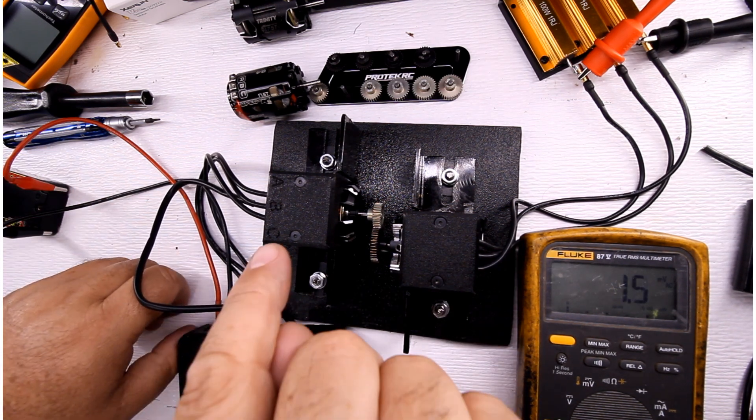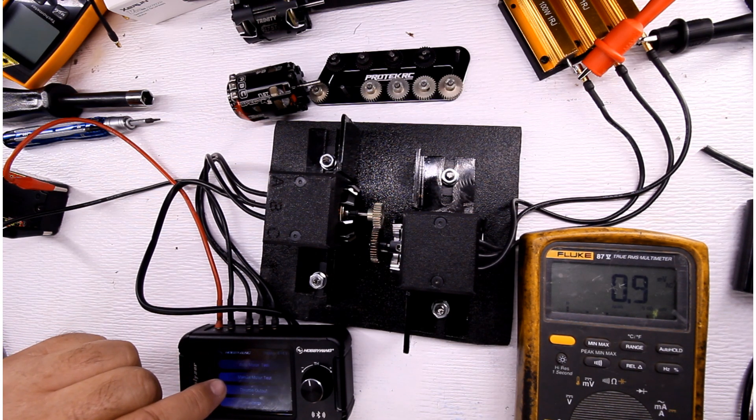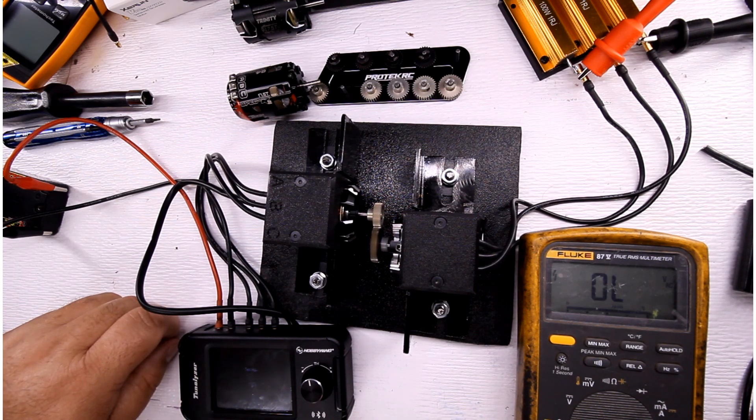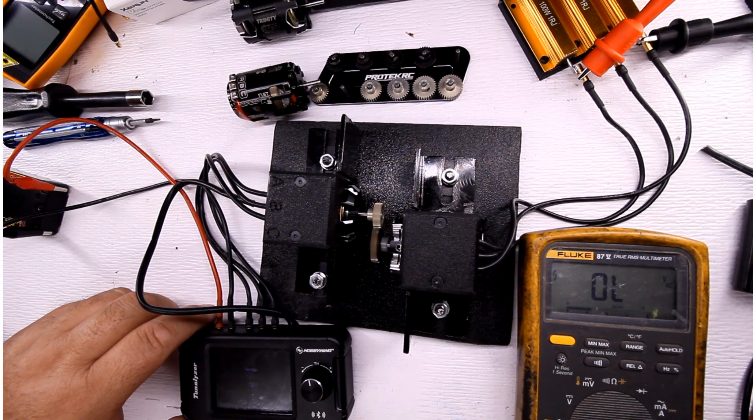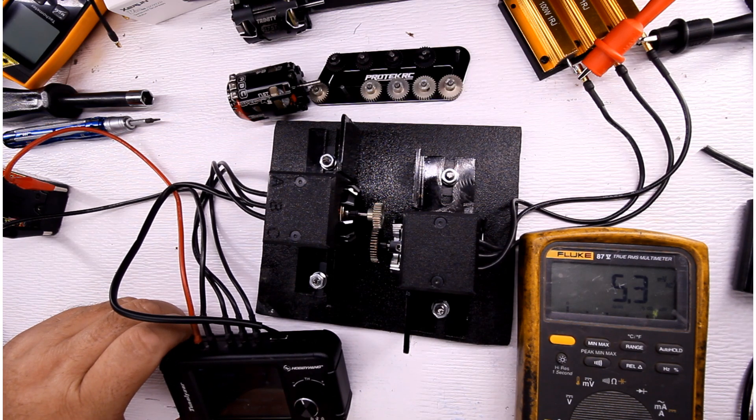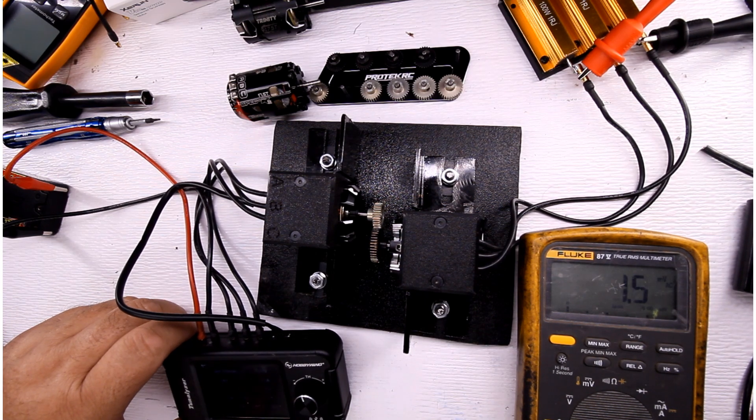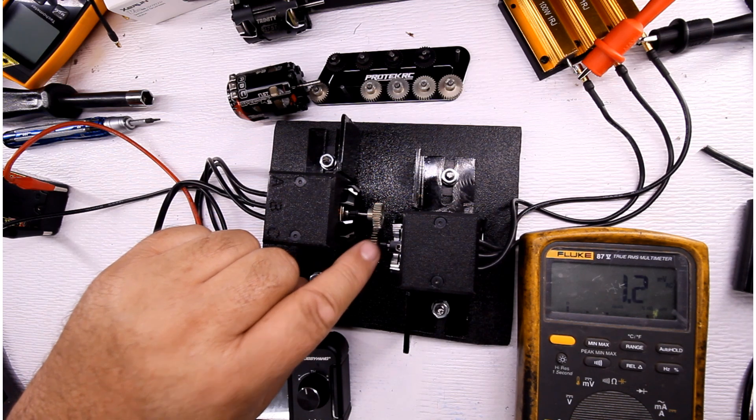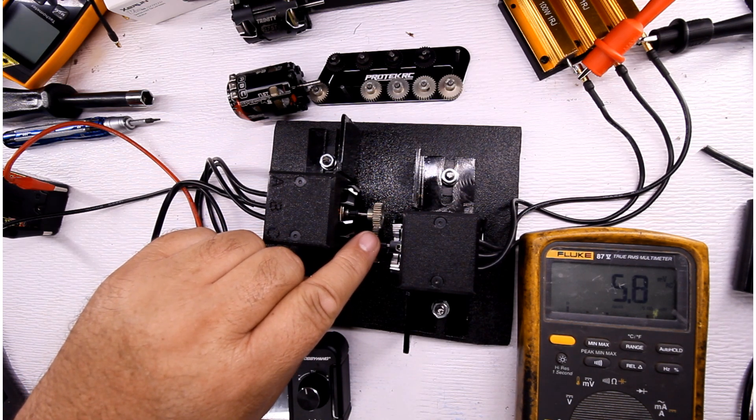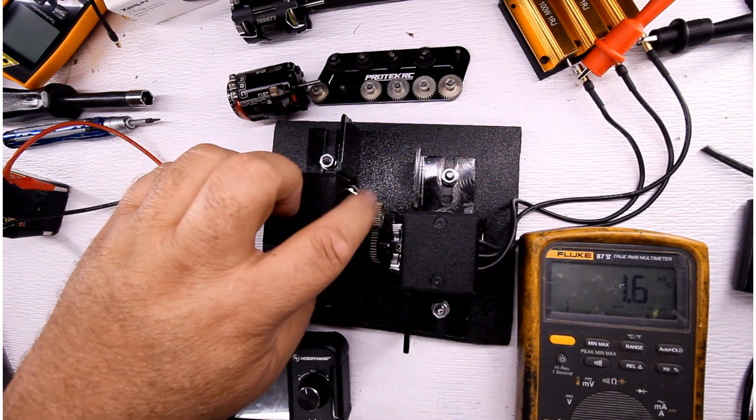Now, I'll hook up the Tekin and see what that one does, but first off, let's do this. So here's drawn nine amps. Nine amps is what this one draws at. The voltage I pulled on this was 4.369. Alright, let's swap it out and gear this one to match this.